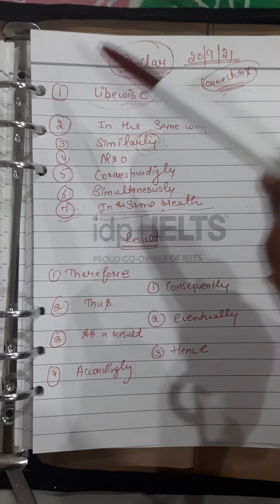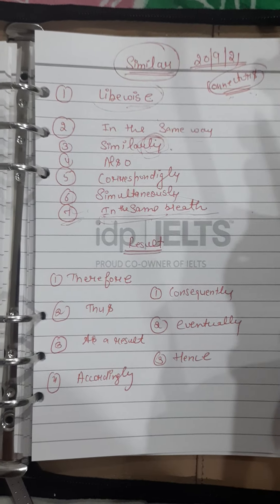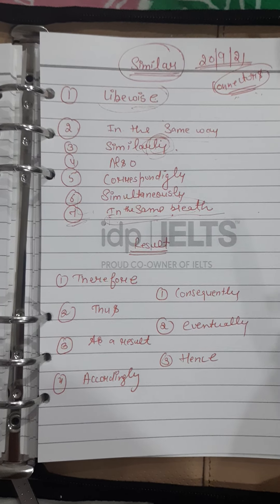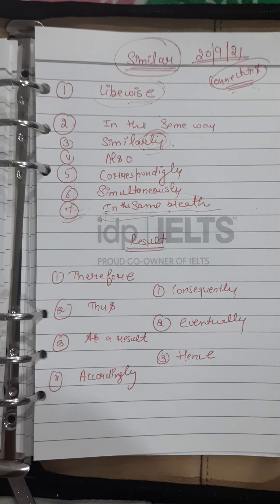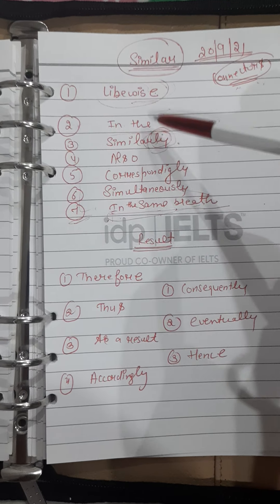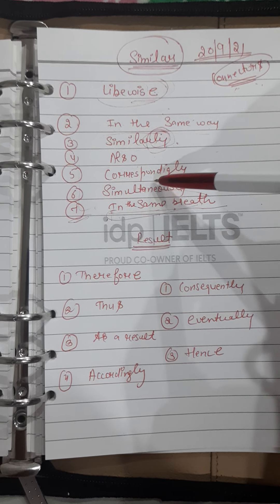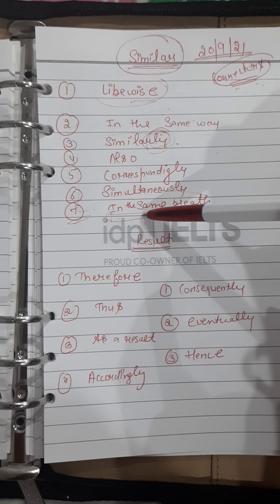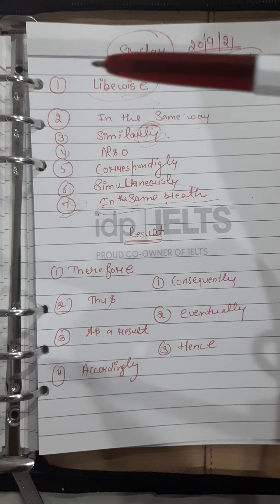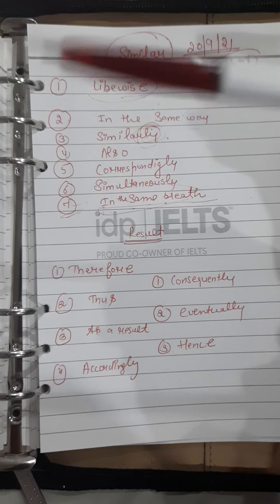For example, if you want to show the same trend — like the trend is repeating and you want to say that this has already happened similarly — then you can use connectors such as: likewise, in the same way, similarly, also, correspondingly, simultaneously, and in the same breath.